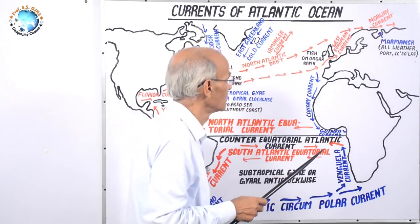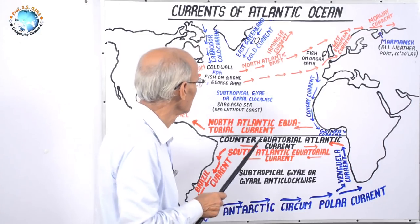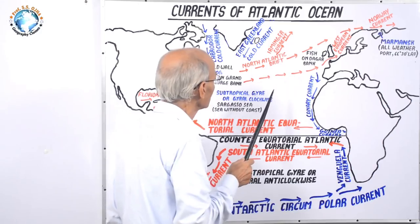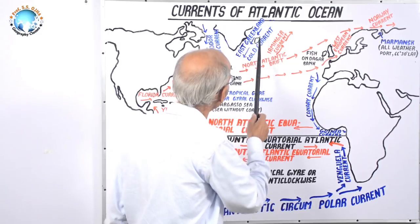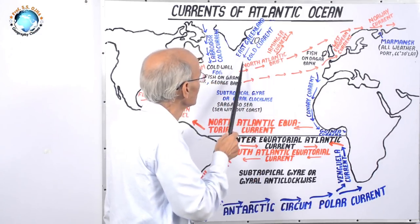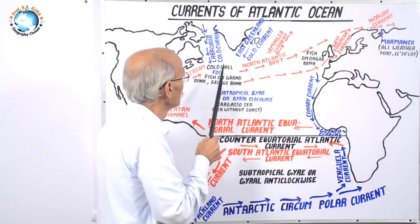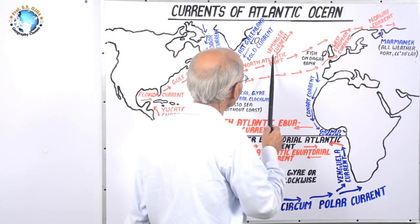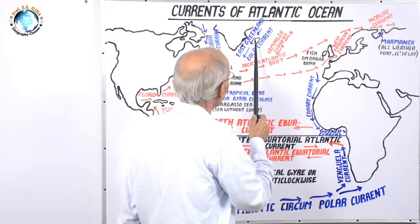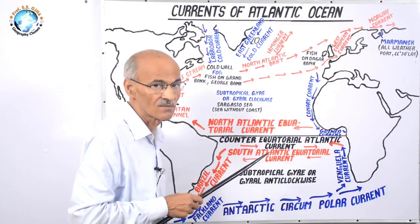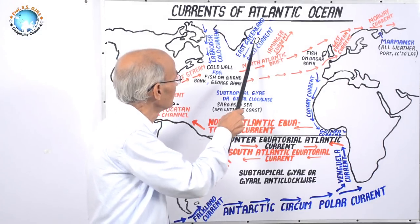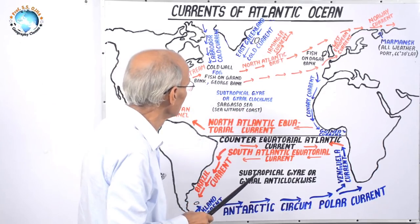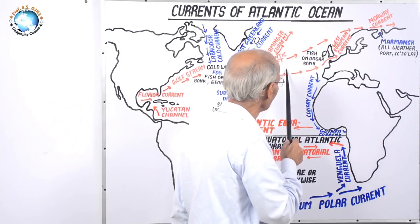Near Iceland, there is the Iceland Current, which is a warm current. To the east of Greenland, the East Greenland Current is a cold current, similar in nature and velocity to the Labrador Cold Current. The warm Iceland Current keeps Iceland's southern part relatively warmer, which is why most of Iceland's population, including its capital, is found along the southern coast.